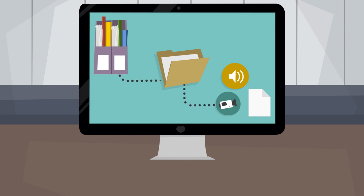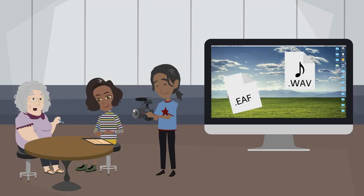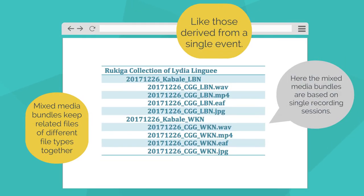A bundle is essentially the same thing as a folder on your computer, and these can be of mixed media or single media type. Use mixed media bundles to keep together files derived from a single event. Here is an example where the mixed media bundles are based on single recording sessions. In this example, each bundle consists of an audio file, a video file, a transcription file, and a photograph.